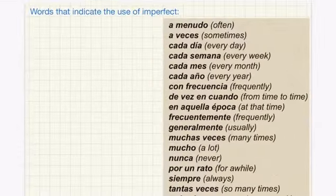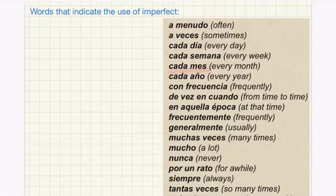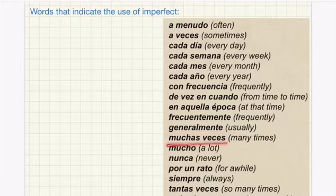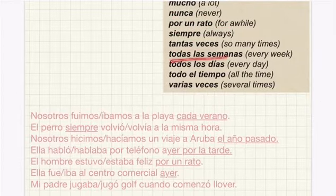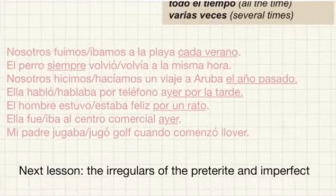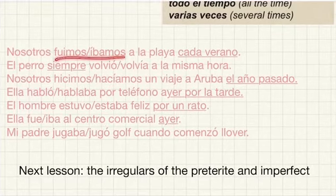And here are some words that indicate the use of the imperfect tense: a menudo, a veces, cada día, cada semana, cada mes, cada año, con frecuencia, de vez en cuando, en aquella época, frecuentemente, generalmente, muchas veces, mucho, nunca, por un rato, siempre, tantas veces, todas las semanas, todos los días, todo el tiempo, and lastly varias veces.